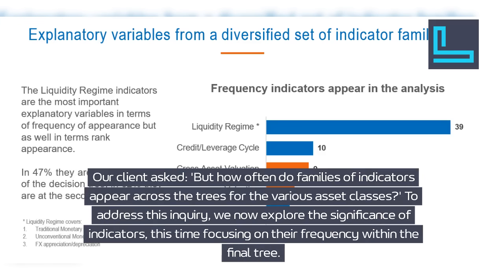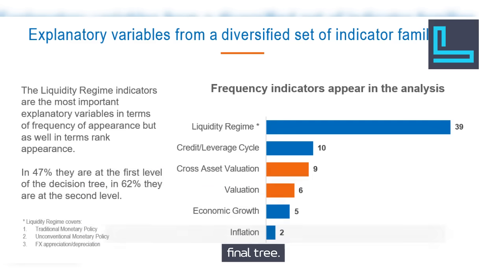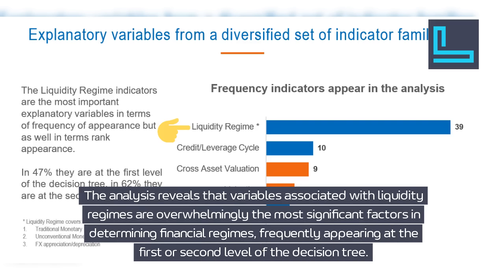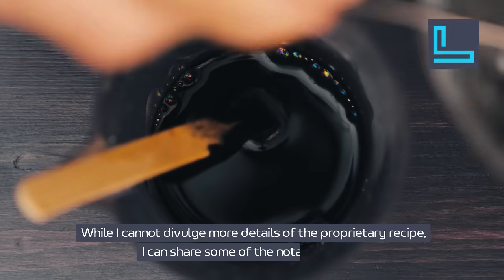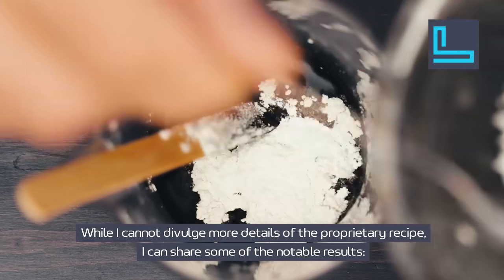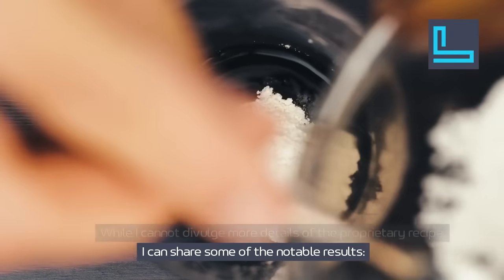Our client asked: how often do families of indicators appear across the trees for the various asset classes? To address this inquiry, we explore the significance of indicators, this time focusing on their frequency within the final tree. The analysis reveals that variables associated with liquidity regimes are overwhelmingly the most significant factors in determining financial regimes, frequently appearing at the first or second level of the decision tree.